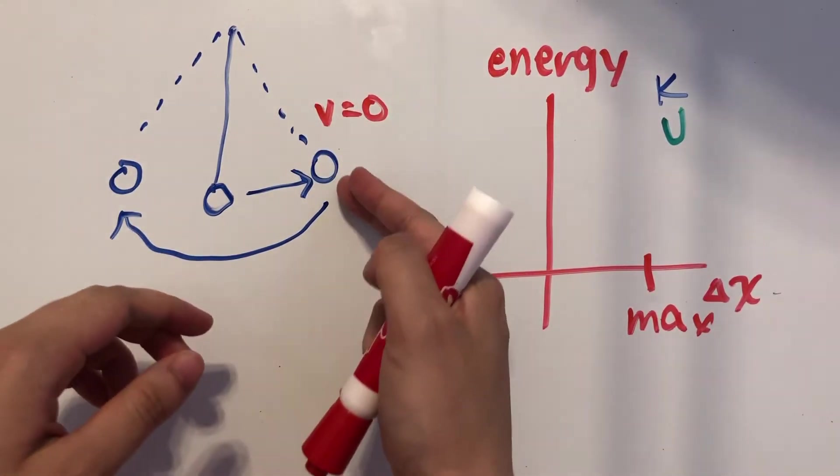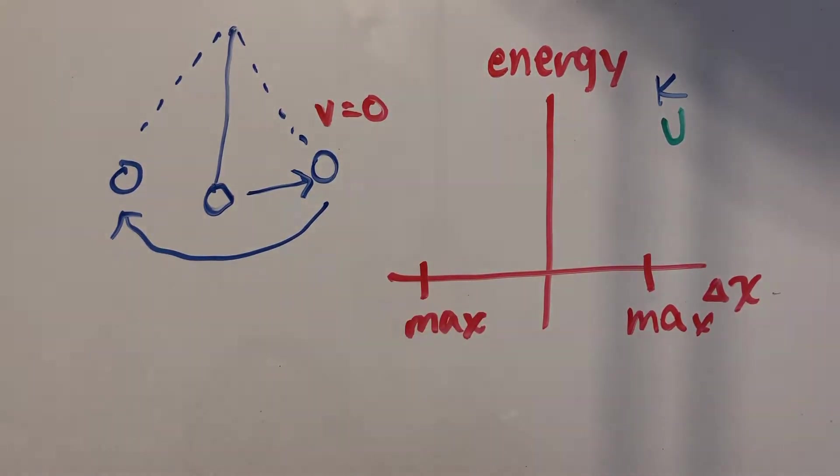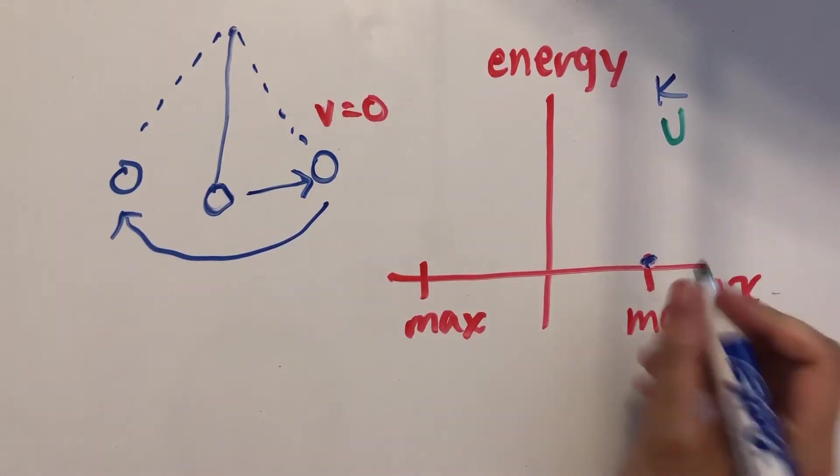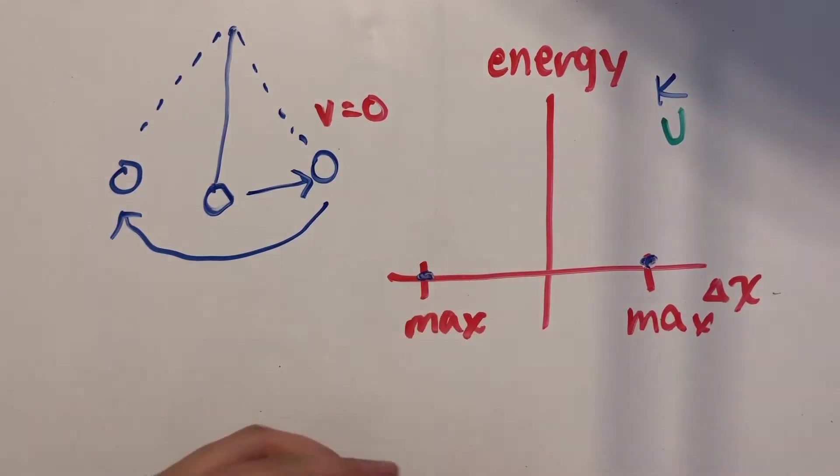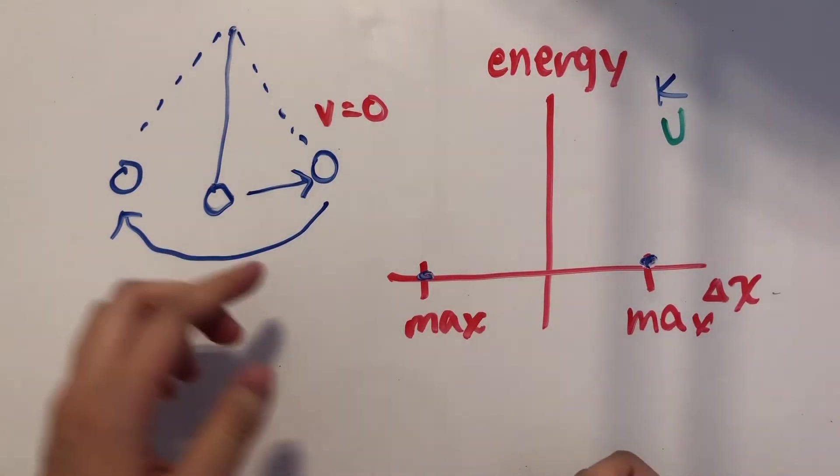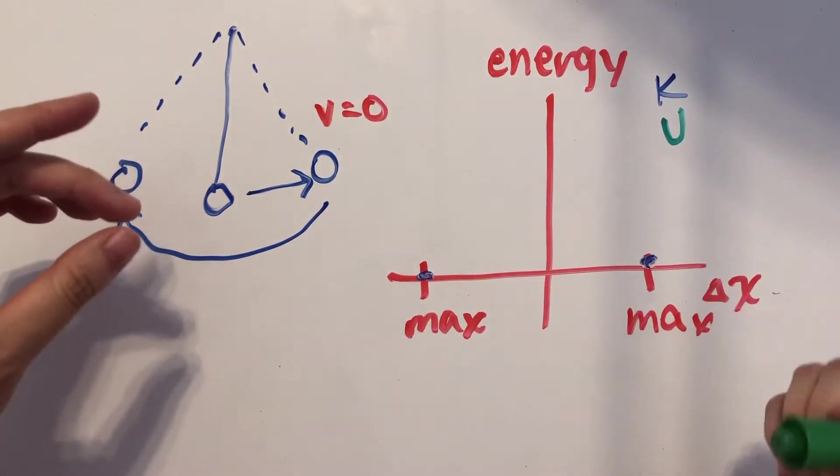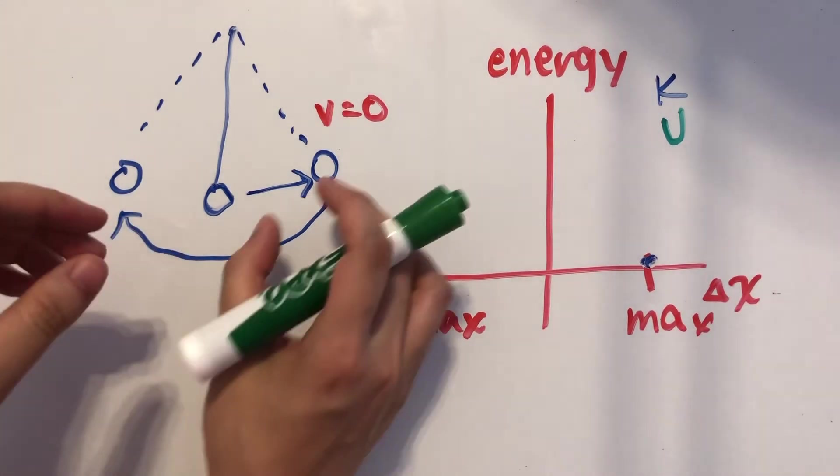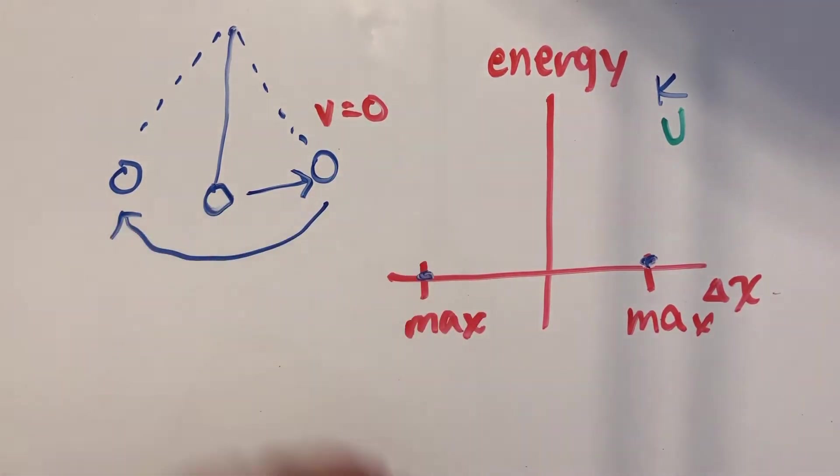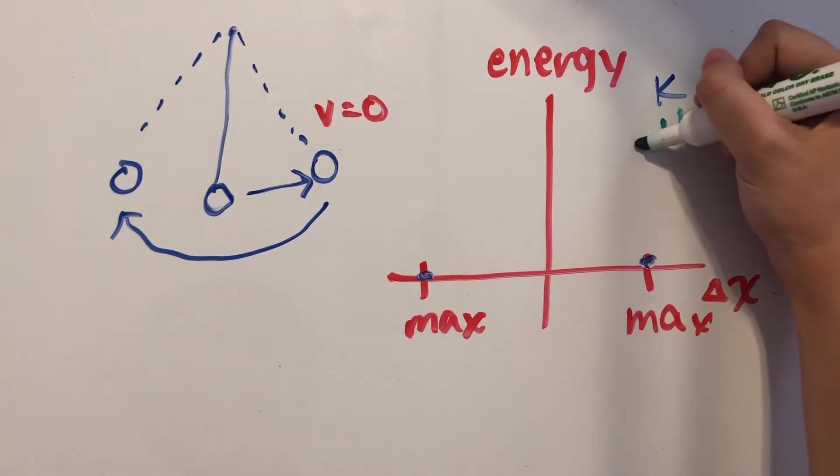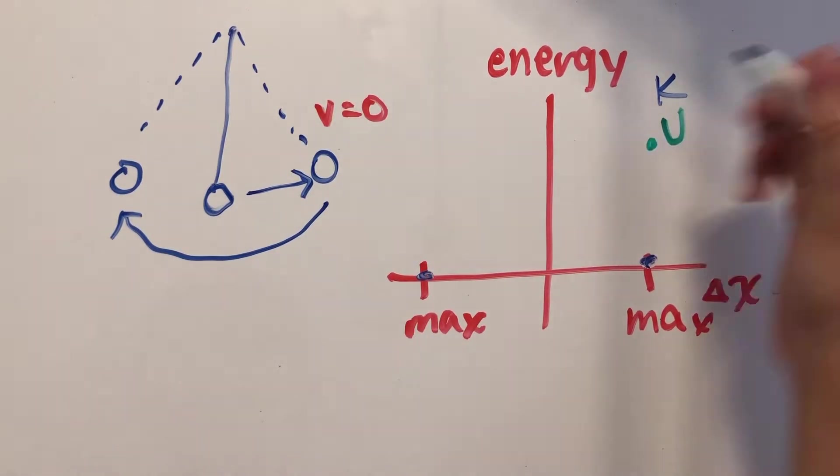So since the velocity is zero at the maximum displacement position, then kinetic energy is also going to be zero. So at this maximum displacement position and this maximum displacement position, kinetic energy will be at zero and our potential energy will then be at its maximum value because it has all this potential to swing back in the opposite direction. So potential energy would be up here.